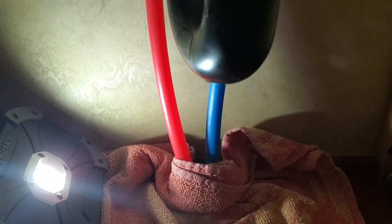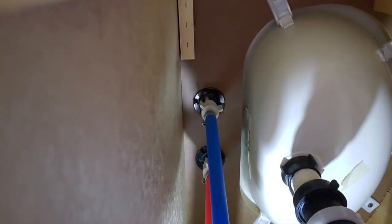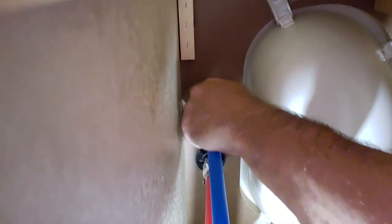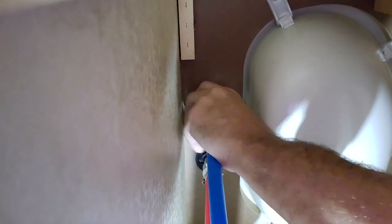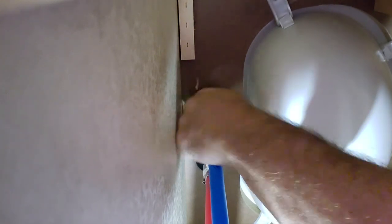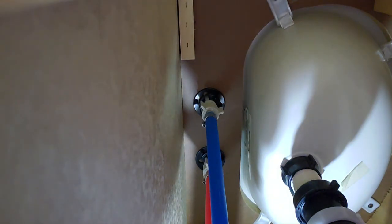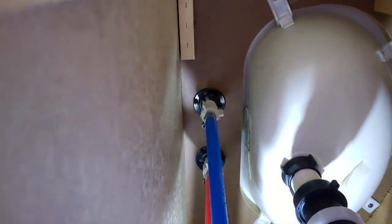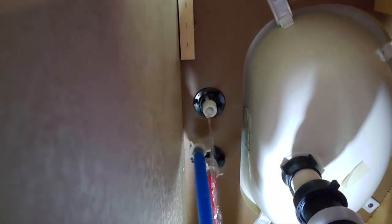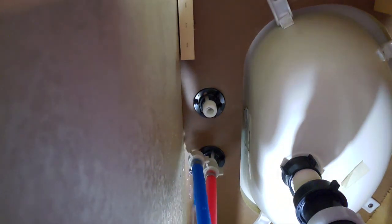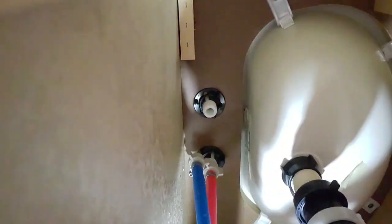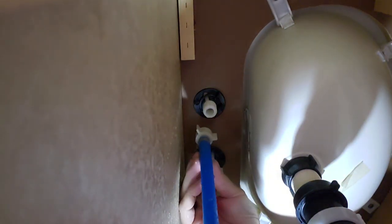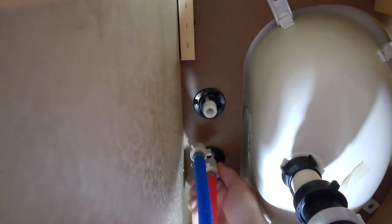That was easy. That one loosened up really easy. As you can see we're getting a little water, that's fine. We want to catch it so it doesn't get down in the cabinetry. These cabinets aren't made real great anyway, so any moisture on this type of cabinetry would not be good. I'm gonna get the hot water line off now.